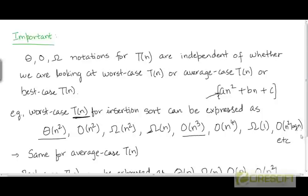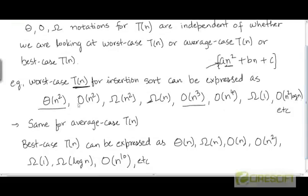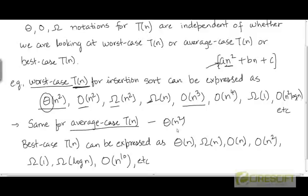It is also in O(n²logn), because a function in O(n²logn) must have the same rate of growth as n²logn or a smaller rate of growth, and this quadratic function is growing at a smaller rate than n²logn. So the worst case running time could have been represented using all three notations — theta, big O, and big omega — in a variety of ways. Similarly, the average case running time for insertion sort, which we wrote as theta, could also be represented using these other notations.